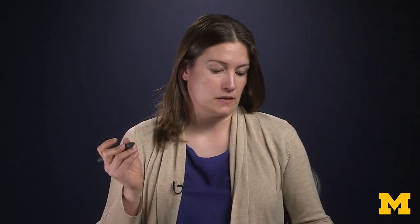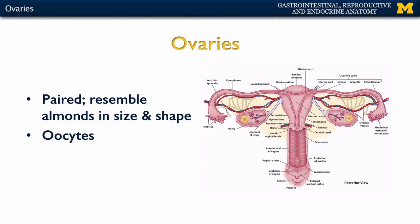I'll be using the term homologous to talk about structures or organs that are homologous between males and females. Moving on to some specifics of the ovaries: we have two ovaries, very closely related to both the uterine tubes as well as the uterus. This is where you have the development of the oocytes, so very important in terms of gametes.